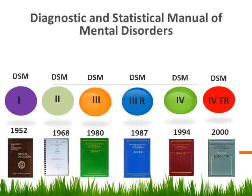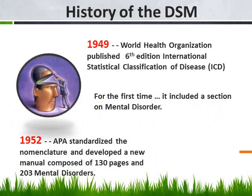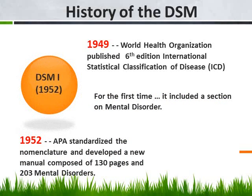Since 1952, there have been several editions of this manual, starting with the DSM-1 and up to the DSM-4TR we are currently using. This is a very important book that deals with standardizing all of the nomenclature that psychologists use, so that a psychologist in Chicago and a psychologist in San Diego reading the term about a mental disorder will both share the same definition.